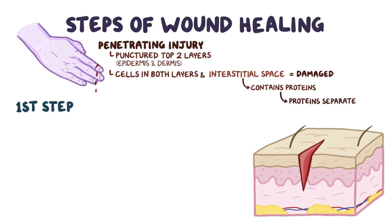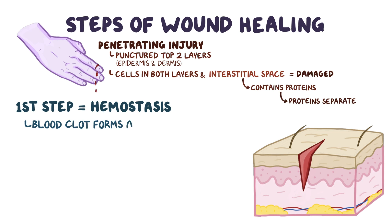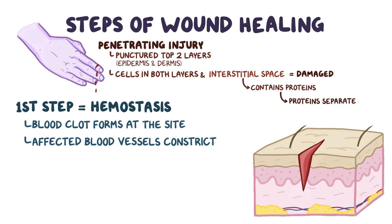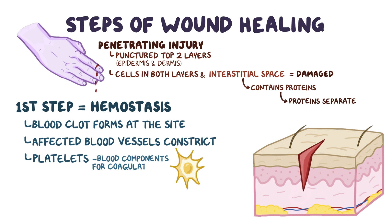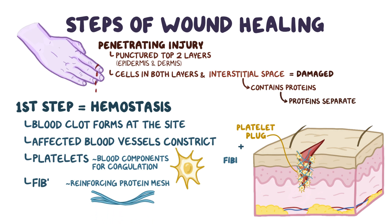The first step of wound healing is hemostasis, where a blood clot forms at the site of trauma to prevent further blood loss. Hemostasis starts when blood vessels affected by trauma constrict. Platelets, which are tiny blood components involved in coagulation, immediately aggregate around the affected tissue and stick together to form a platelet plug. The platelet plug is further reinforced by a protein mesh called fibrin, which ultimately forms the blood clot.